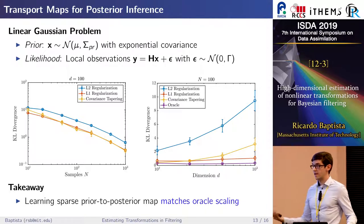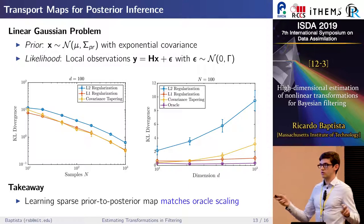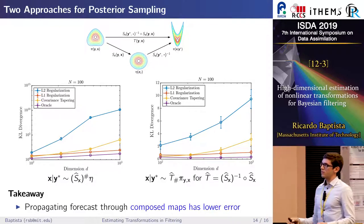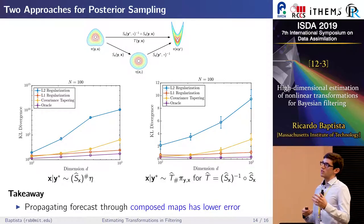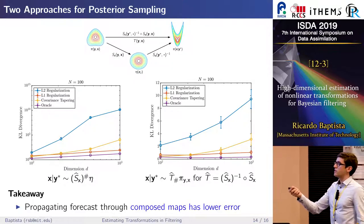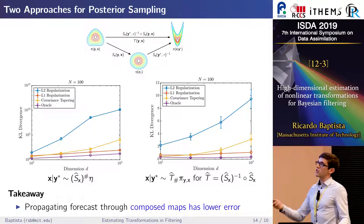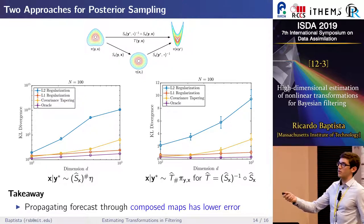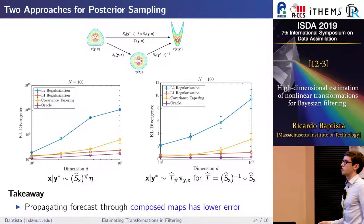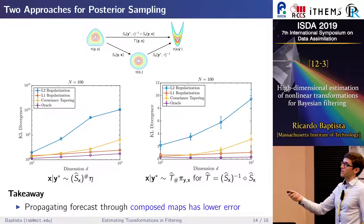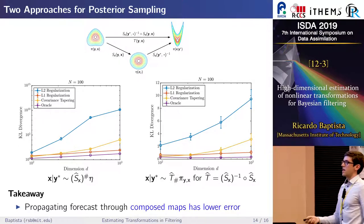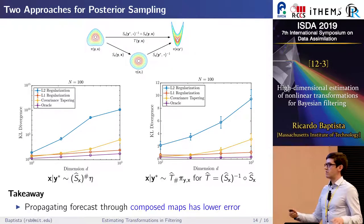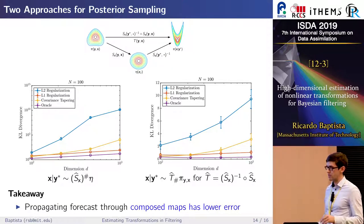When dealing with nonlinear maps, there's also the question of how best to use the derived transformations to sample from the posterior. We compare methods: sampling from a standard Gaussian and pushing through the inverse map, versus using the map composition approach. The composition shows improvement both in the magnitude of posterior approximation error and in its scaling with respect to dimension.